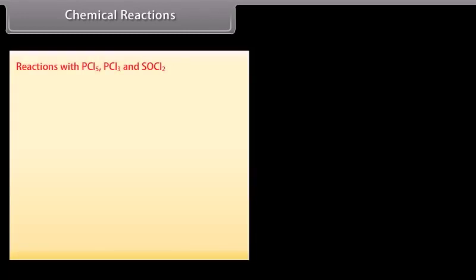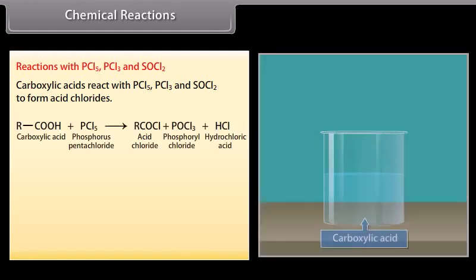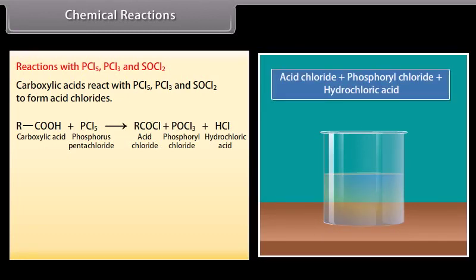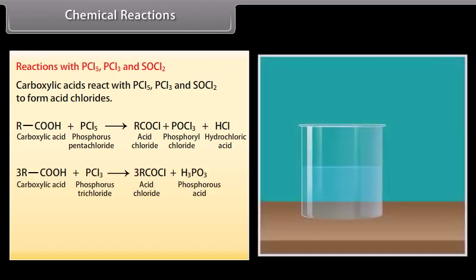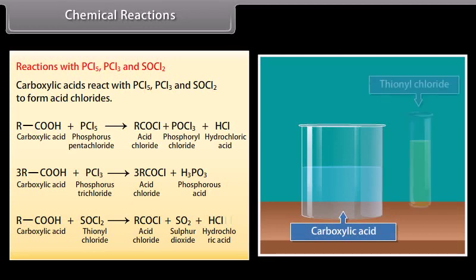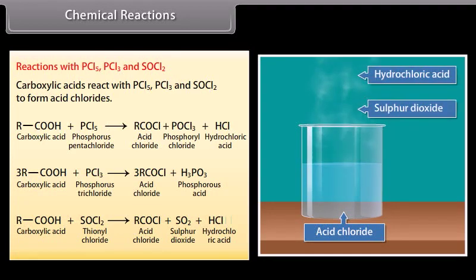Reactions with phosphorus pentachloride, phosphorus trichloride, and thionyl chloride: carboxylic acids react with these reagents to form acid chlorides. Carboxylic acid reacts with phosphorus trichloride to form acid chlorides and phosphorous acid. Carboxylic acid reacts with thionyl chloride to form acid chlorides, sulfur dioxide, and hydrochloric acid.